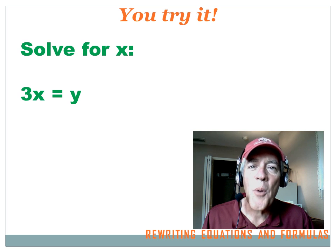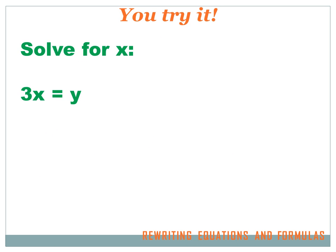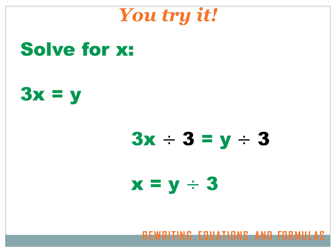Try this one — hit your pause key, do the problem, and then hit the forward key to move on to the answer. Okay, I've got an expression: 3x equals y. But I want to solve it for x — find out what x equals in terms of y, not what 3x equals. Same as always: I want to get rid of this 3. To get rid of a times 3, I divide by 3, and I divide both sides by 3. So 3x divided by 3 leaves just x, and on the right side I've got y divided by 3. So x equals y divided by 3.